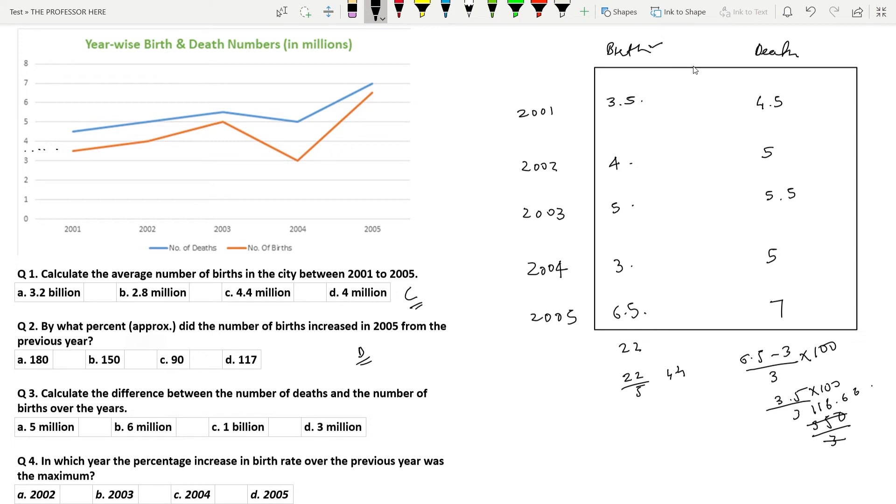Question number 3. Calculate the difference between the number of deaths and the number of births over the years. All you have to do is subtract the number of birth from number of death. So 4.5 minus 3.5 is 1, 5 minus 4, 1, 5.5 minus 5 is 0.5, 5 minus 3 is 2 and 7 minus 6.5 is 0.5. So you add it up, you get 2, 2.5, 4.5, 5. 5 million is the answer. Option A.